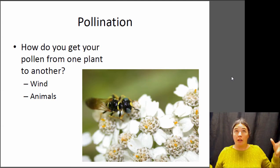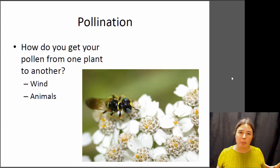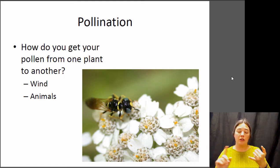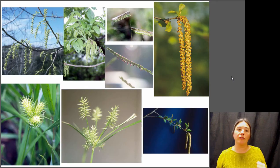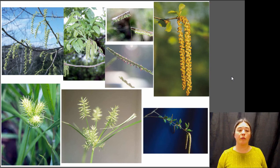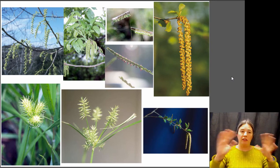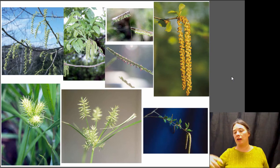So those are some ways plants can avoid mating with themselves. Now, they do want to mate with someone else — so how do you get your pollen from the anther to some other flower? There are two main ways plants do this: many use wind, and many use animals of various types to move the pollen.